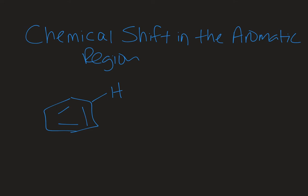Welcome to Chemistry with Caroline. In this video we're going to look at chemical shift within the aromatic region — between roughly seven and eight parts per million on a proton NMR. That is where protons that are attached to a benzene ring or a benzene derivative will show up.